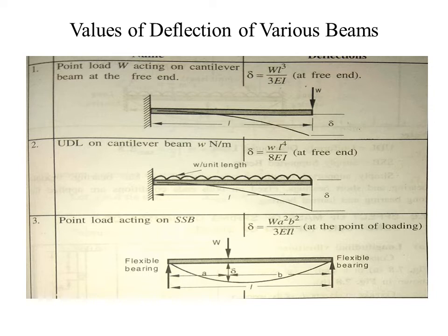Now, for the deflection equations of beams. First, consider a cantilever beam with a point load W at the free end. The deflection delta is given by WL³ divided by 3EI. For a cantilever beam of length L with a uniformly distributed load, the deflection delta is equal to WL⁴ divided by 8EI.